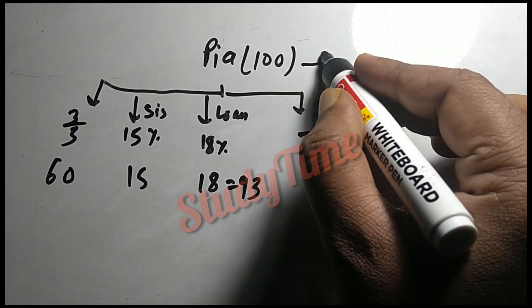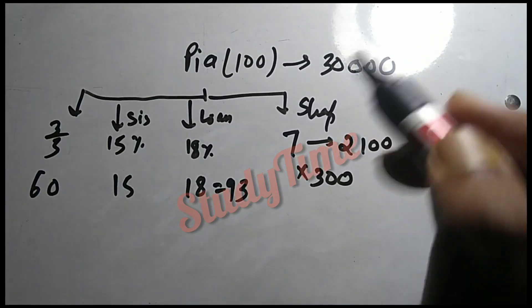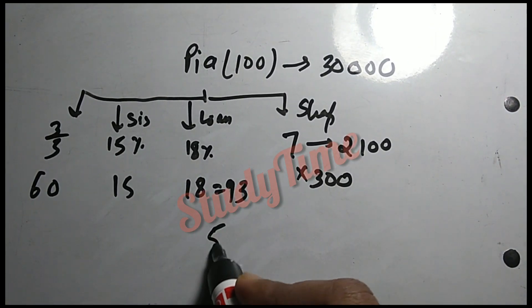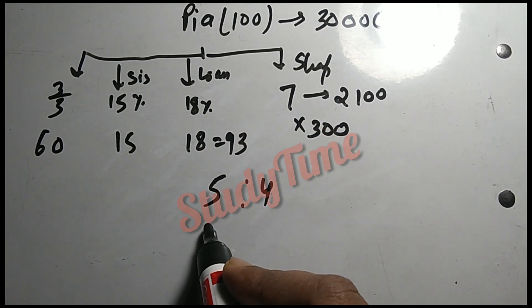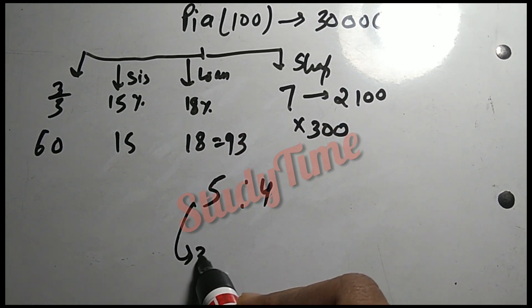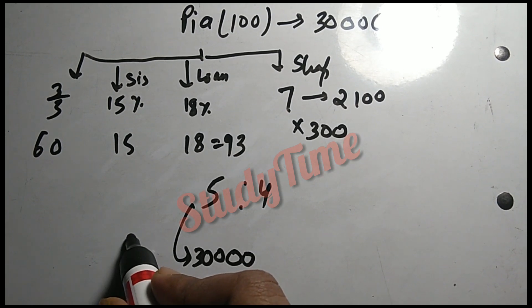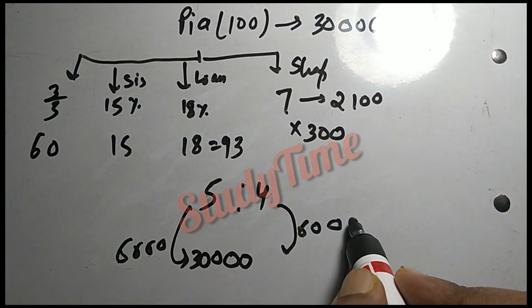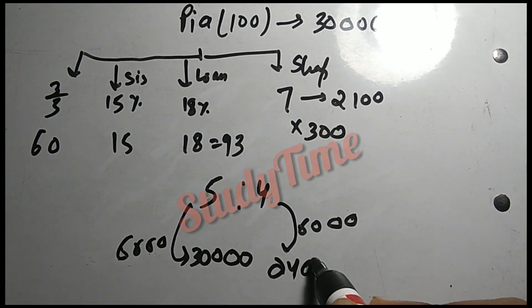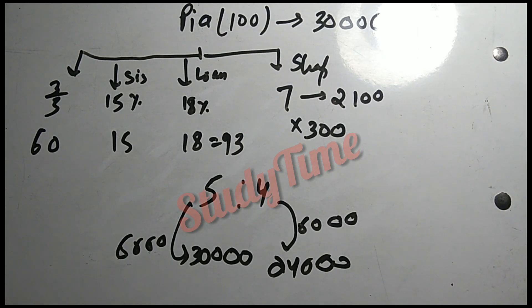This gives us 30,000. We have the ratio of 5 to 4. Pia's is 30,000, so Soma will be 6,000 times 4, which gives us 24,000. That's the answer.